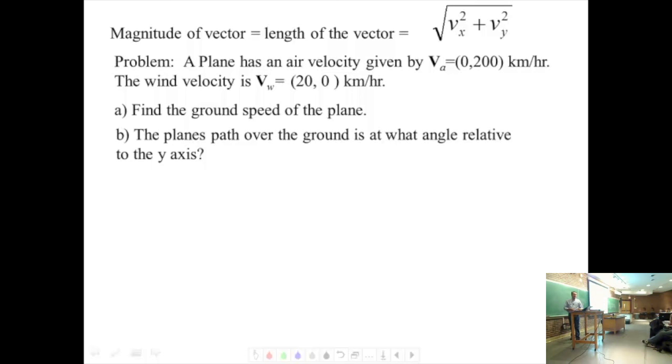Here's an example of how you'd use this. A plane has an air velocity of 0, 200 kilometers per hour, and it's in a wind that has a velocity of 20, 0 kilometers per hour. I'm giving you already the components. What is the ground speed of the airplane? And what angle relative to the y-axis?